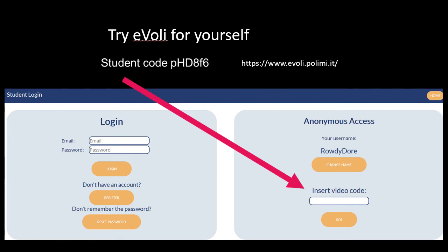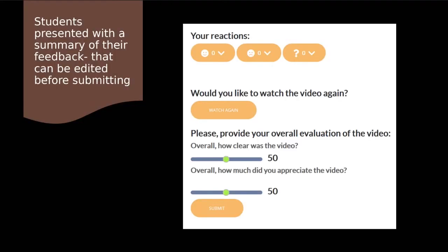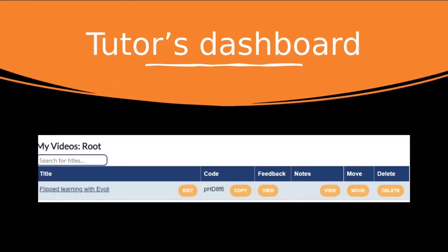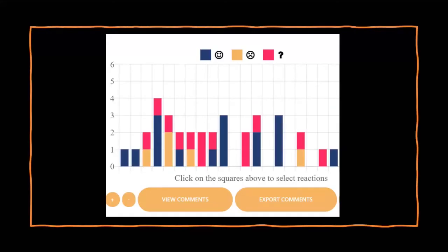Students can express opinions — whether they liked or didn't like sections of the video. At the end, students are presented with a summary of their feedback, giving an overall evaluation of the video as well as the tagging function. On the tutor dashboard, the data is color-coded: blue shows students appreciated the video, yellow indicates they didn't like or didn't understand a section, and pink shows all the questions students asked. There's interesting emotional feedback too.